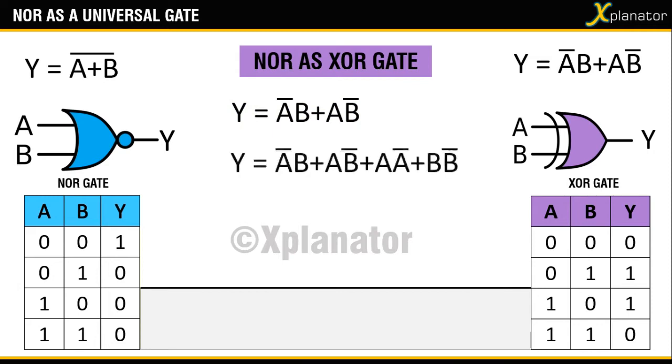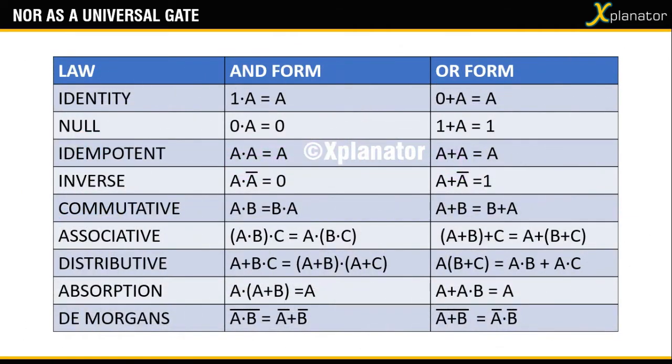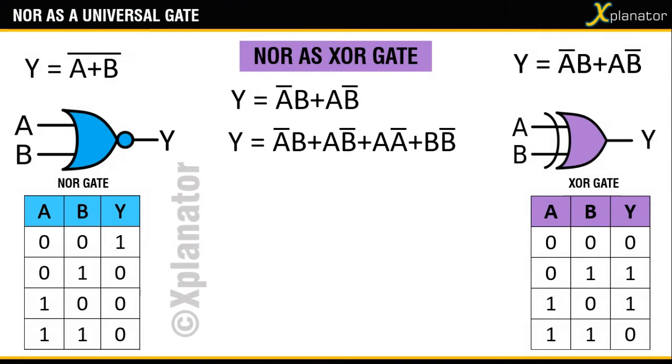we add a a bar plus b b bar to the existing expression. This does not alter the existing expression because if you refer back to the table, a a bar equals zero. Now you have four terms and you can spot some common terms, so start grouping them. From first and third term you have a bar as common, and from second and fourth term you have b bar as common.